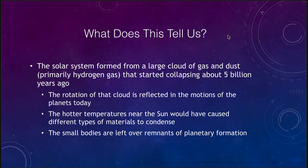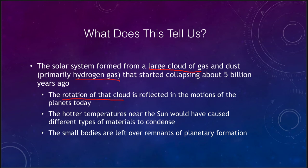We believe that the solar system formed from a large cloud of gas and dust that was primarily hydrogen and started collapsing about five billion years ago. The rotation of that cloud is reflected in the motions of the planets today. The fact that everything orbits counterclockwise now means that that giant gas cloud was once spinning counterclockwise — much, much slower — but it had that very slight motion that got magnified as it began to collapse.